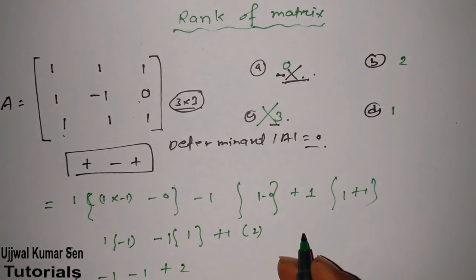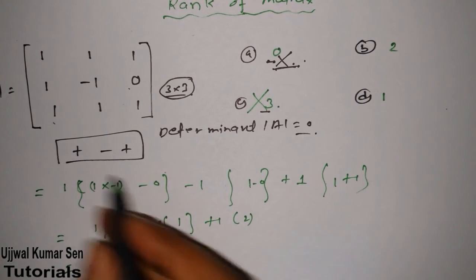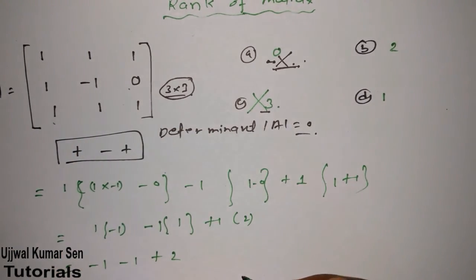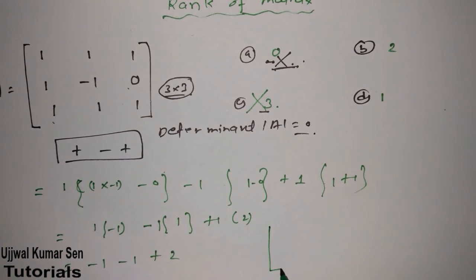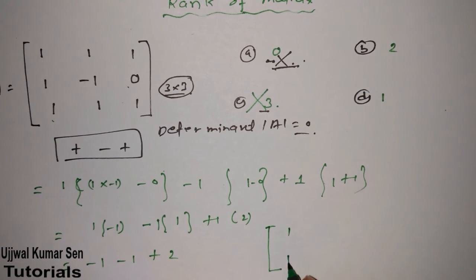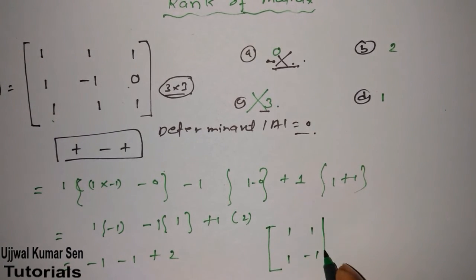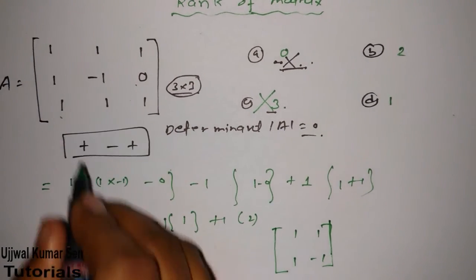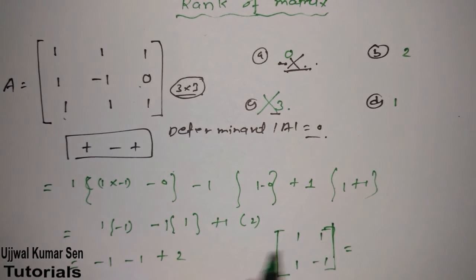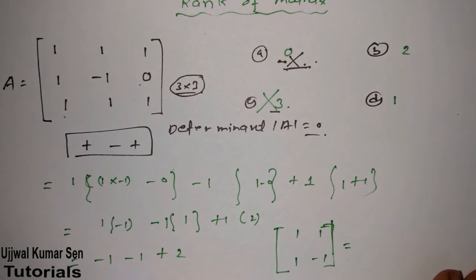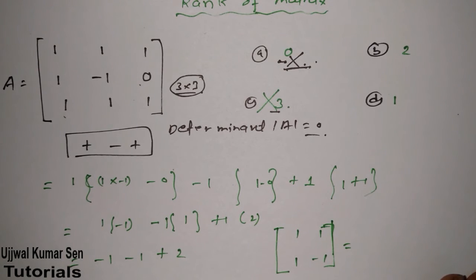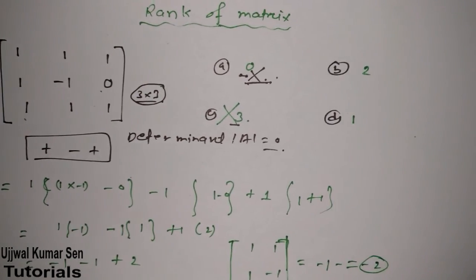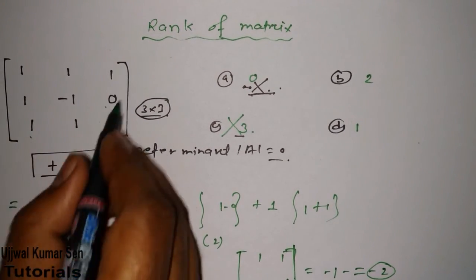Now we have to choose any one of its minor matrix. Let's get started from here to here: 1, 1, 1, minus 1. You can choose this one also. At least one must have its value not equal to zero. So it's minus 1, again it's minus 1, which is equal to minus 2.